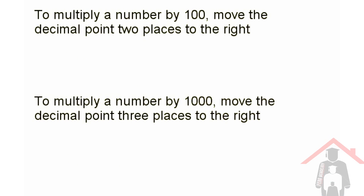When we multiply a number by 100, because there are two zeros, we move the decimal point 2 places to the right. So for example, if I want to multiply the number 3.57 by 100, I will move the decimal point one, two places to the right. It's at the end of the number, so it's 357, and the decimal point can be left out.